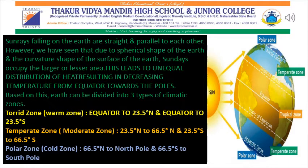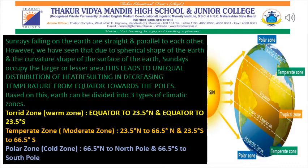Temperate or moderate regions are from 23.5 degrees north to 66.5 degrees north and from 23.5 degrees south to 66.5 degrees south, where sun rays fall at a slight slant. Polar regions extend from 66.5 degrees north to the North Pole and from 66.5 degrees south to the South Pole, where sun rays fall extremely slant. The three types of climatic zones are the torrid zone, temperate zone, and polar zone — also called the warm zone, moderate zone, and cold zone.